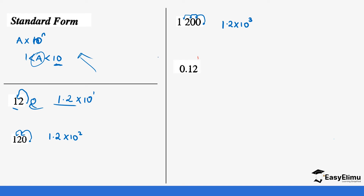Now let's look at values that are smaller than 1. When we have values that are less than 1, the decimal moves in the opposite direction — to the right side — and instead of a positive power it becomes times 10 to a negative power, which is basically division. So for 0.12, we move the decimal one time to the right, which forms 1.2 times 10 power negative 1. This is the same as 1.2 divided by 10, which gives us back the value we started with.